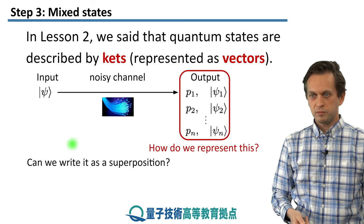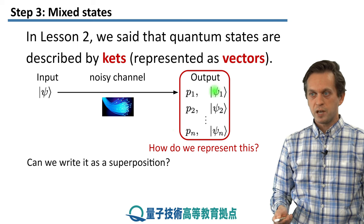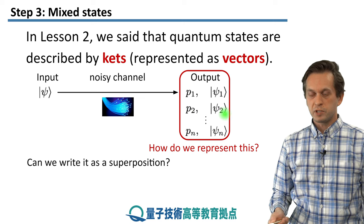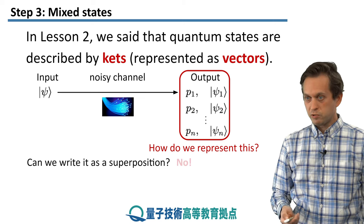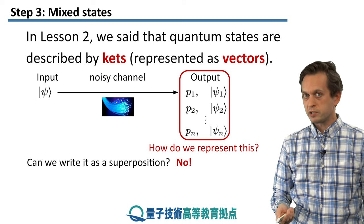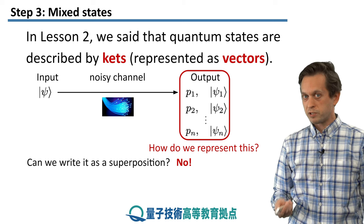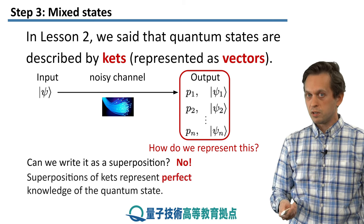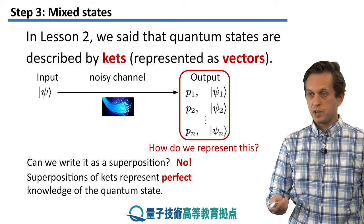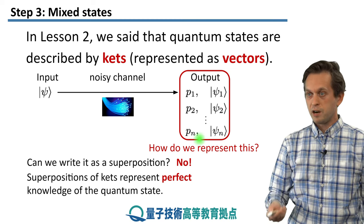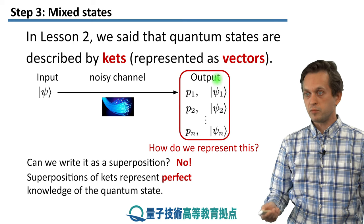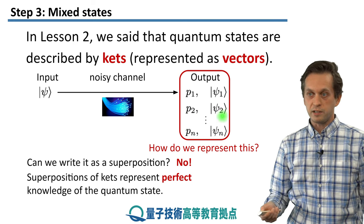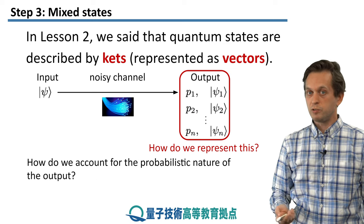Can we write it down as a superposition? For example, can we just write psi 1 weighted by P1 plus P2 times psi 2 and so on? Well, not really, because we said even a superposition of kets is still a pure state. It represents another ket. So it represents full knowledge, perfect knowledge of the system. But here in this scenario, we don't have full knowledge of the system. We only have with certain probability it's this state, with a different probability it's another state.